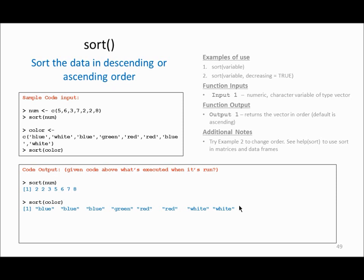Another function is called sort and, as the name suggests, you can sort the data in ascending or descending order. In this example I have a variable called num with some numbers, and when I say sort(num) it sorts the numbers from smallest to largest. The good thing is you can also apply the sort function to strings or characters. If I have a variable called colors with several strings, calling sort(color) sorts the data alphabetically — blue, then green, then red, then white.